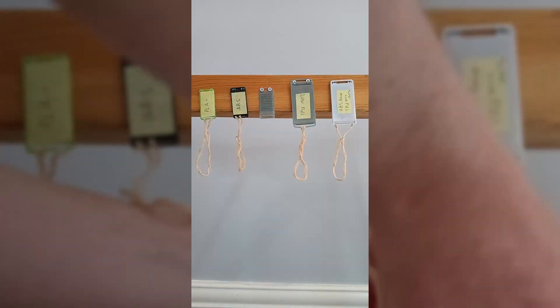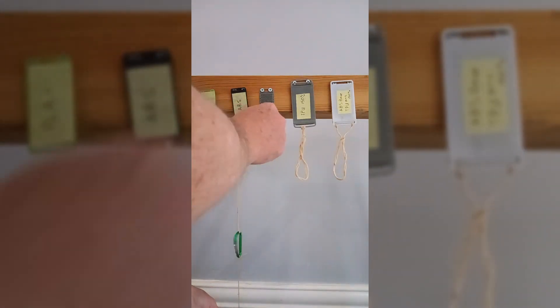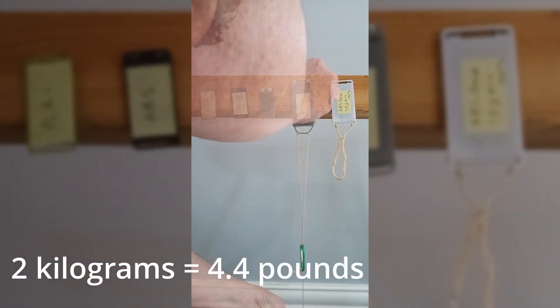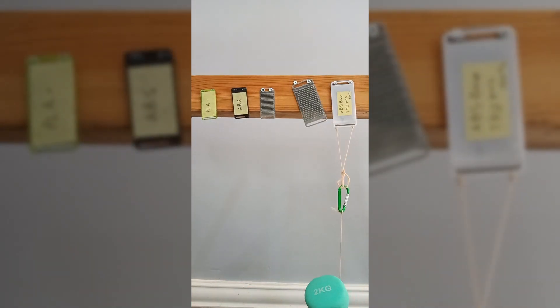From there I ramped things up and went straight to a 2kg weight. The PLA and ABS both broke the holding members but they didn't actually pull away. The pure TPU pulled away at 2kg and the PLA-TPU combination was still going strong. At 2.5kg it was still working fine.